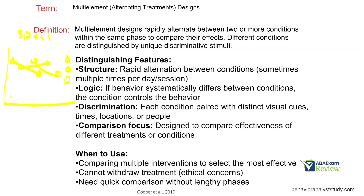Rapid alternation between conditions can occur multiple times. If behavior systematically differs between conditions, the condition controls the behavior. Each condition is paired with distinct visual cues, times, locations, or people — there are no hidden tricks. The comparison focus is trying to evaluate the effectiveness of different treatments or conditions. When should we use these? When we're comparing multiple interventions to find the most effective, or when you can't withdraw treatment. You also don't necessarily need a baseline.